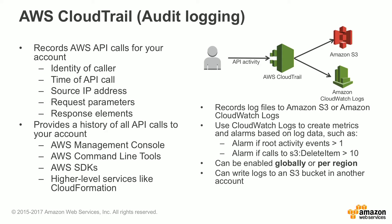CloudTrail can be enabled either globally or on a per-region basis. I would recommend just enabling it globally across your account. You can also write your CloudTrail logs to an S3 bucket in another account. For example, if you have an account owned by your InfoSec team, you can have every other account record its CloudTrail logs to that InfoSec team's AWS account's S3 bucket.